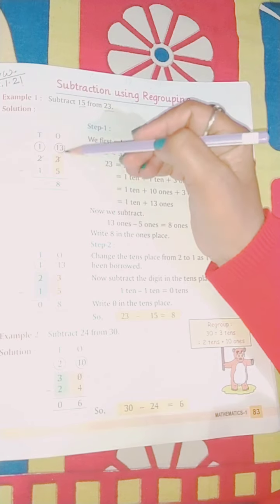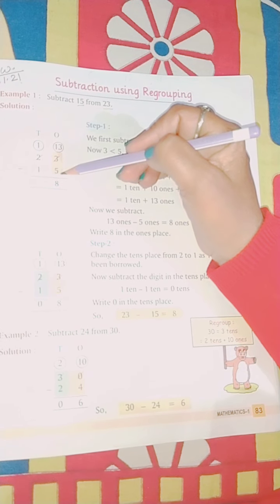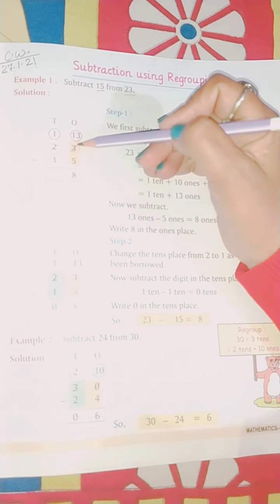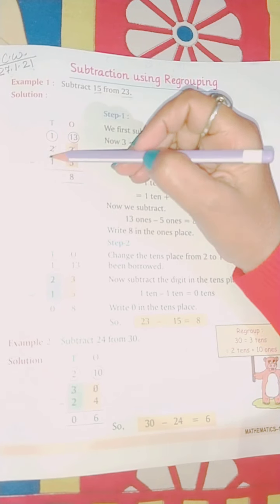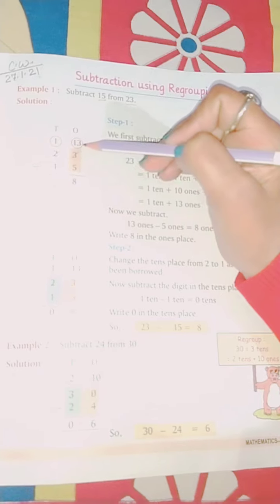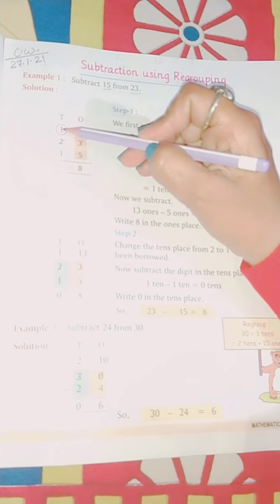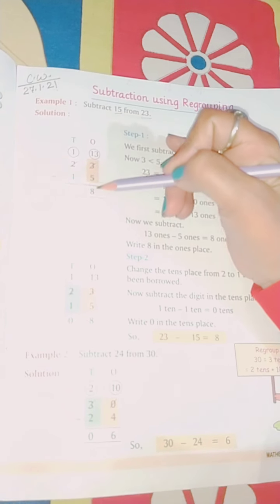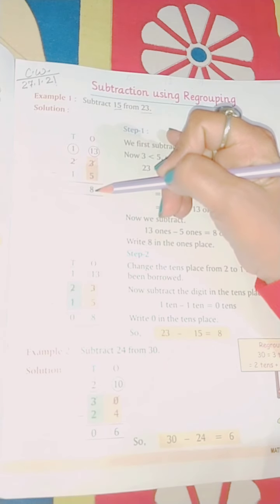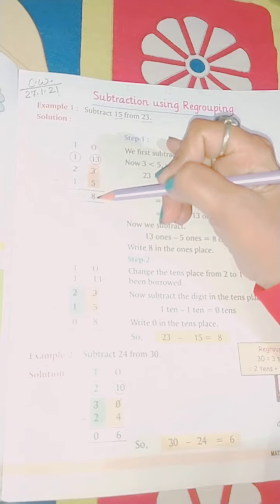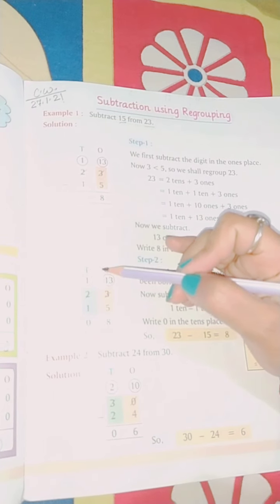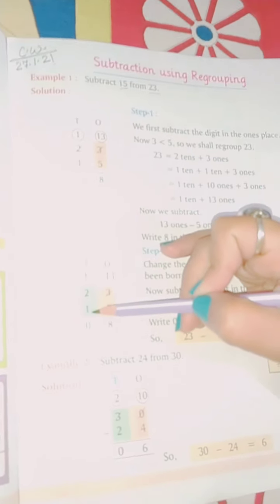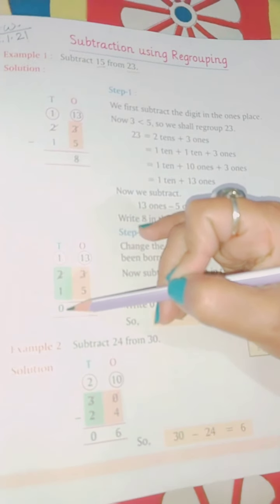23 minus 15. Now 3 is less than 5, so again we will borrow 1 from this side and this will become 13. And हम 3 minus कर देंगे, 3 को cut कर देंगे. Now 2, we have given 1 number to 3, so now this is left only 1. Now we will do the sum. 13 minus 5 is 8. This is the first step, as I taught you on the board just now. Now the second step: 13 minus 5 is 8, we have done. Now here 1 is left and 1 is left, so 1 minus 1 is 0. Understood?